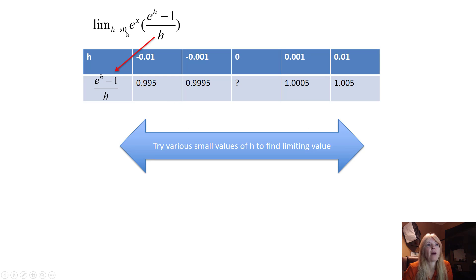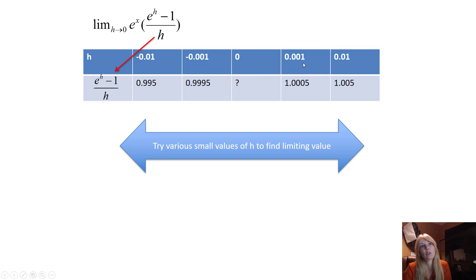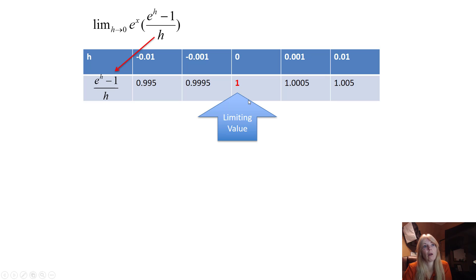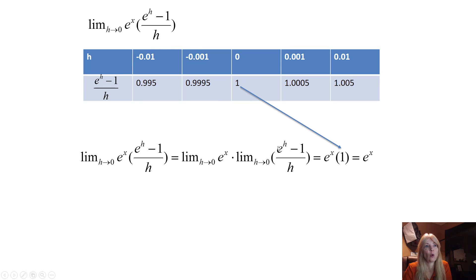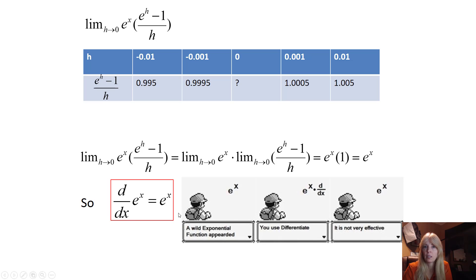Let h get really really small — plugging in small negative and small positive values. Put this in your calculator: (e^0.001 - 1) / 0.001. Coming from either side, when h gets small this piece goes to 1 — that's our limiting value. So I still have e^x out front, and that piece goes to 1. This implies the derivative of e^x is e^x.